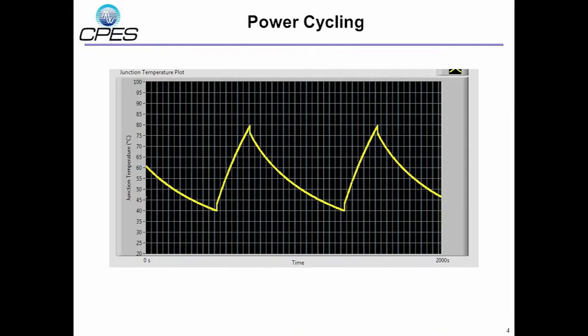This waveform shows an example of power cycling done between the junction temperature limits of 40 degree Celsius to 80 degree Celsius. Now, this was about cycling.